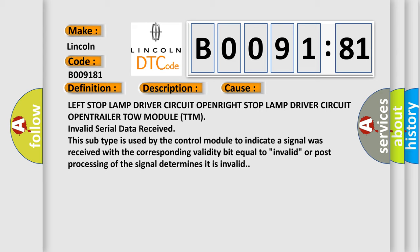This subtype is used by the control module to indicate a signal was received with the corresponding validity bit equal to invalid, or post-processing of the signal determines it is invalid.